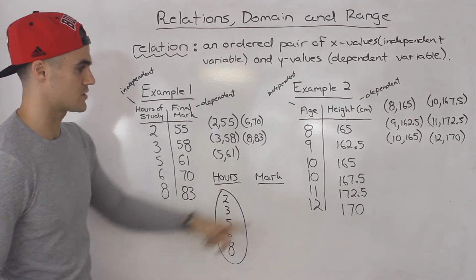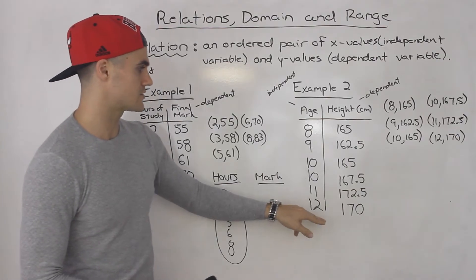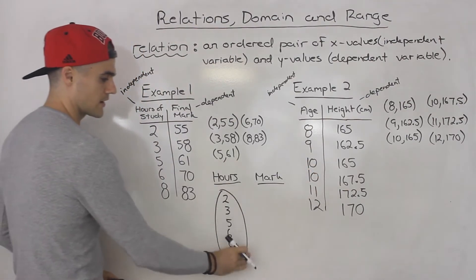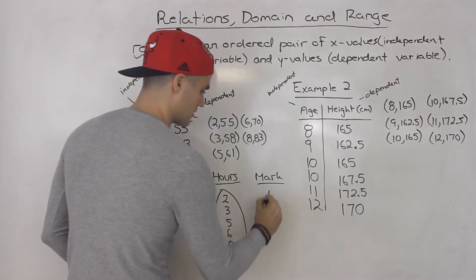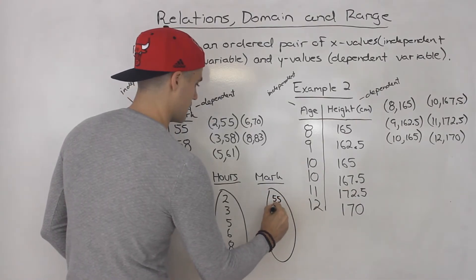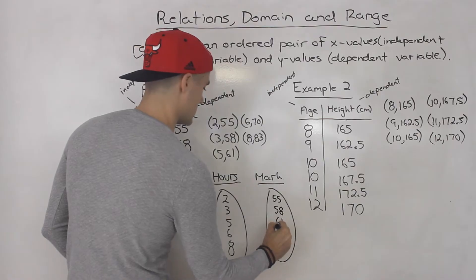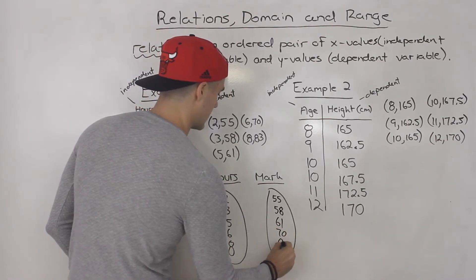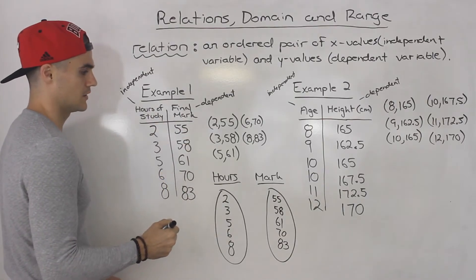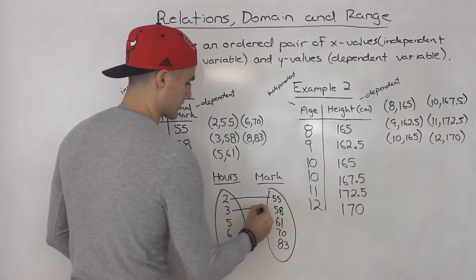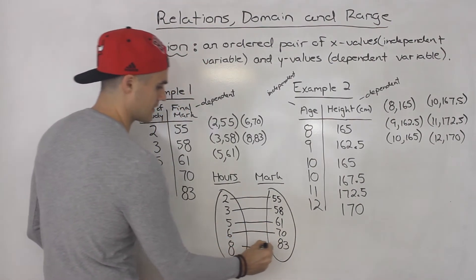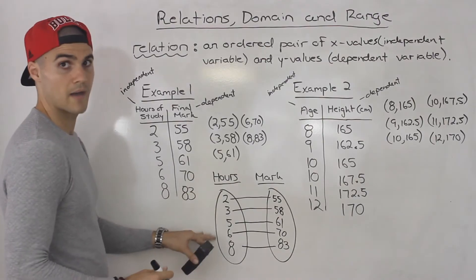It's going to be better shown with example two, because notice how the 10 repeats and the 165 repeats — but you always write it just once in the mapping diagram. So for the mark side, we have 55, 58, 61, 70, 83. Everything is already in order. Then you just match everything: 2→55, 3→58, 5→61, 6→70, 8→83. So this is called a mapping diagram — another way to represent a relation.